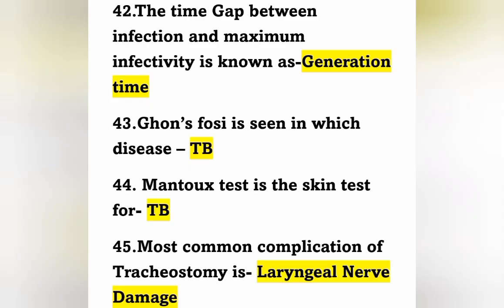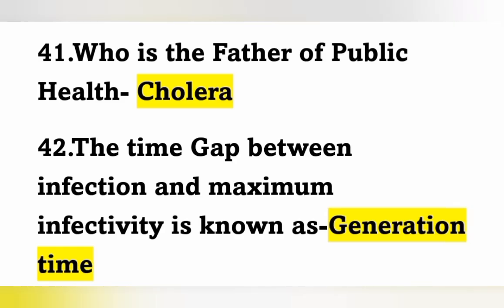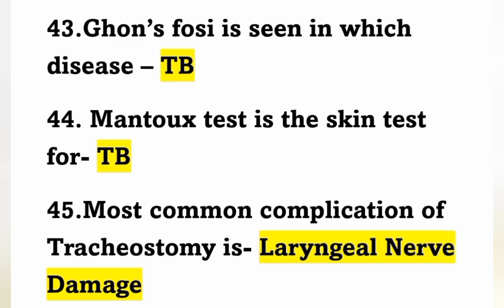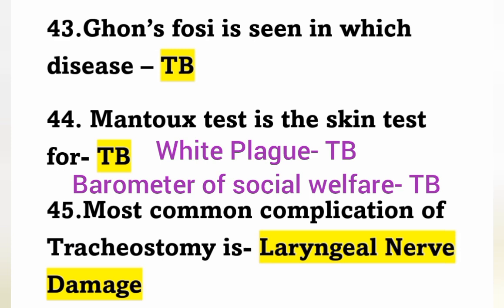The father of public health is associated with cholera. The time gap between infection and maximum infectivity is known as generation time. Pott's disease occurs in TB. Mantoux test is the skin test used for tuberculosis. The most common complication of tracheostomy is laryngeal nerve damage. TB is also known as the white plague, and is called the barometer of social welfare.